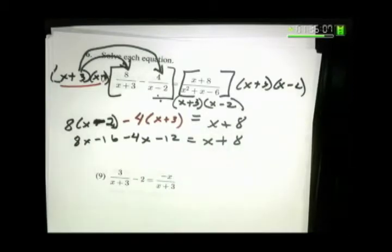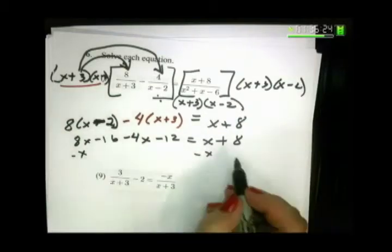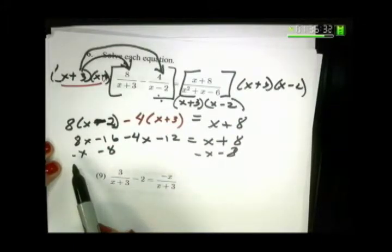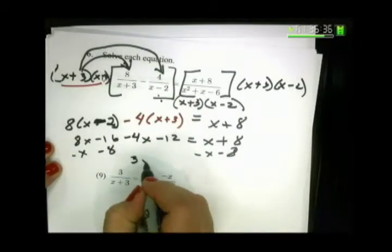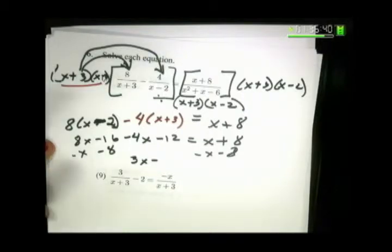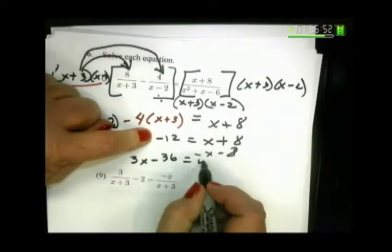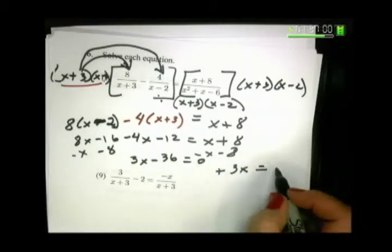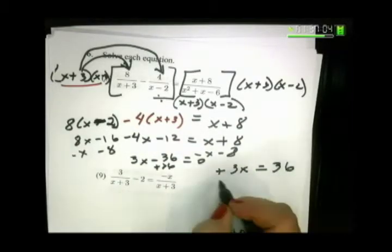And now, like Mr. Judge said, you want to get your like terms together. So, I could subtract x from both sides and subtract eight. Eight x minus x would give me seven x minus four x would be three x. Negative sixteen minus eight, negative twenty-four? No. Minus twelve, negative thirty-six. Now, we have three x, add thirty-six to both sides, and divide by three. And x is twelve.